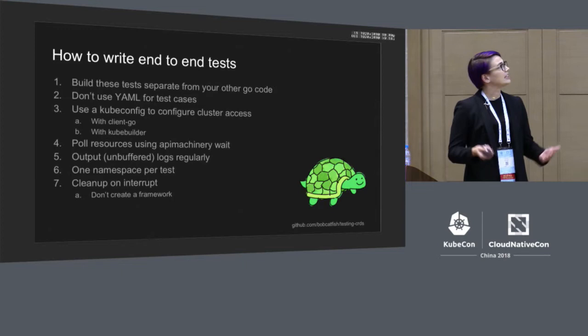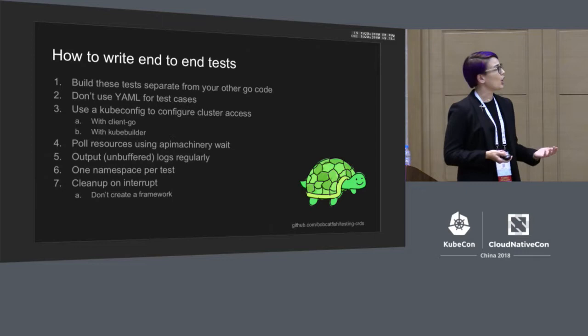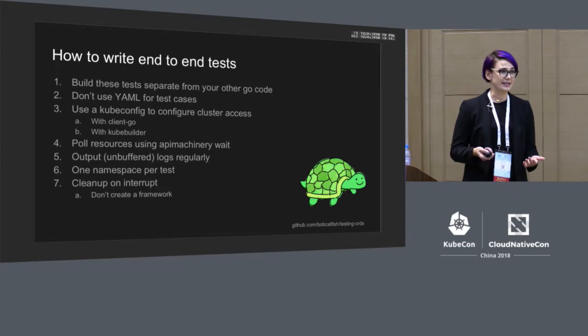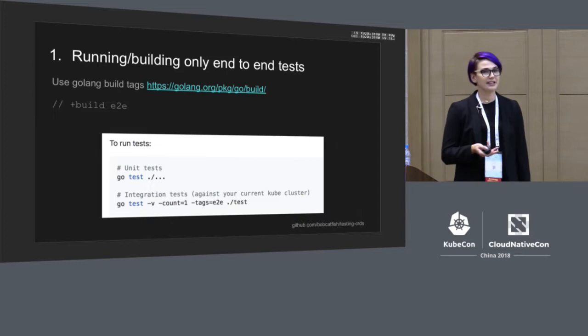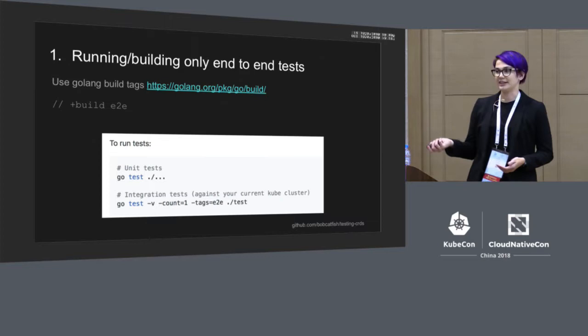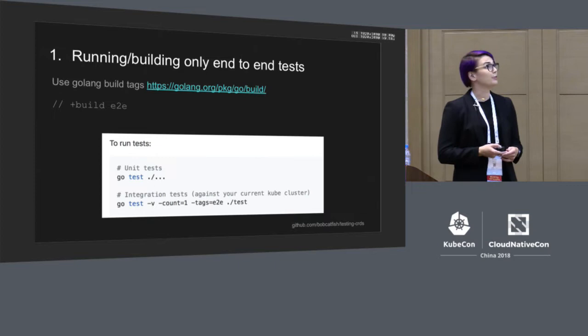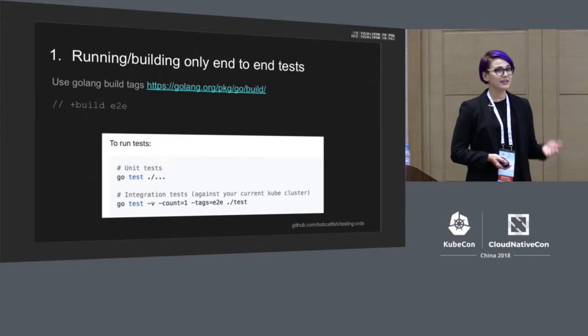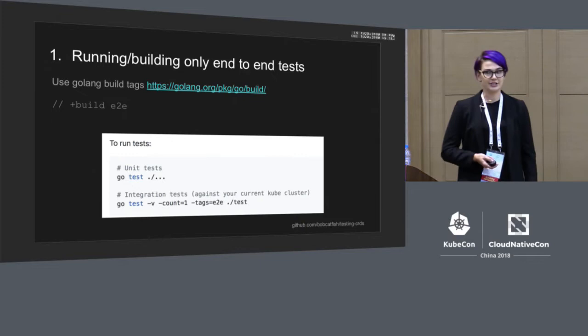Let's look at seven specific things you can do to get your end-to-end tests up and running. The code samples shown here are available in the GitHub repo at the bottom of the slide. The first recommendation is about how your tests are invoked. As you add these tests, you'll notice that running GoTest runs all your tests. Since end-to-end tests have to connect to a cluster and are slower, I recommend using GoBuild tags. In this example, we use the tag E2E to identify tests we don't want to run by default. When you do want to run them, just specify the tag and run them in isolation.